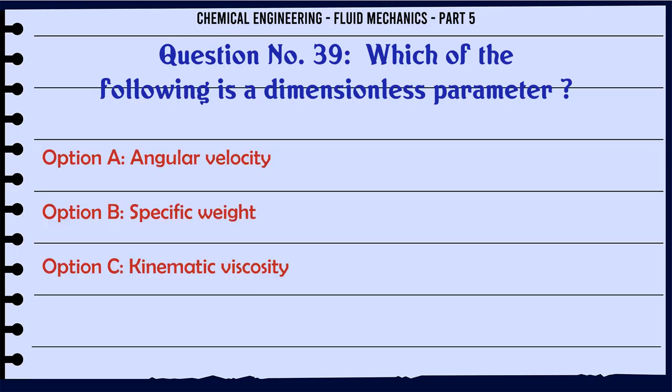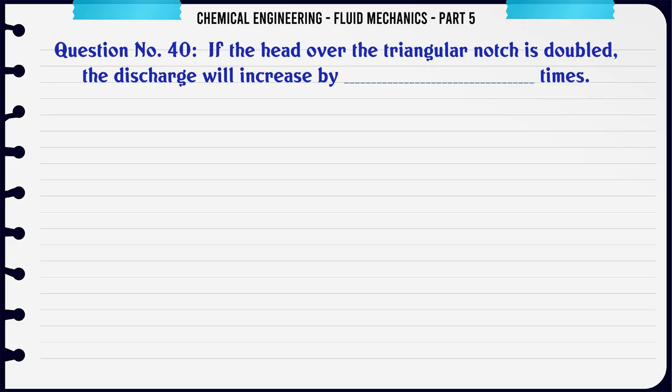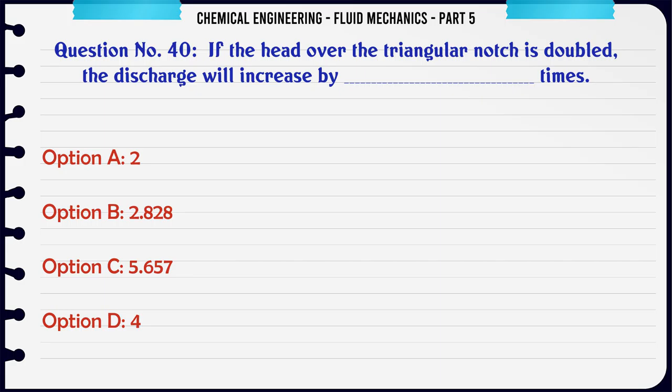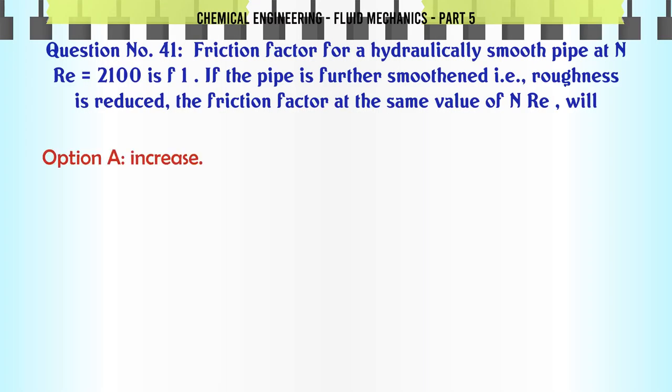Which of the following is a dimensionless parameter? a) angular velocity, b) specific weight, c) kinematic viscosity, d) none of these. The correct answer is none of these. If the head over the triangular notch is doubled, the discharge will increase by times: a) 2, b) 2.828, c) 5.657, d) 4. The correct answer is 5.657.